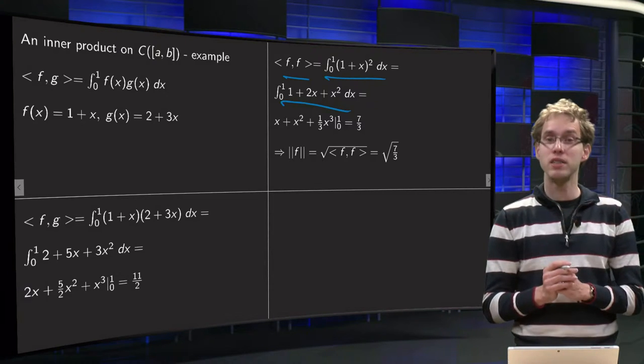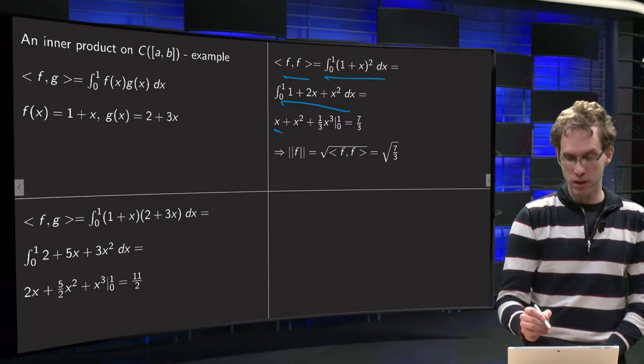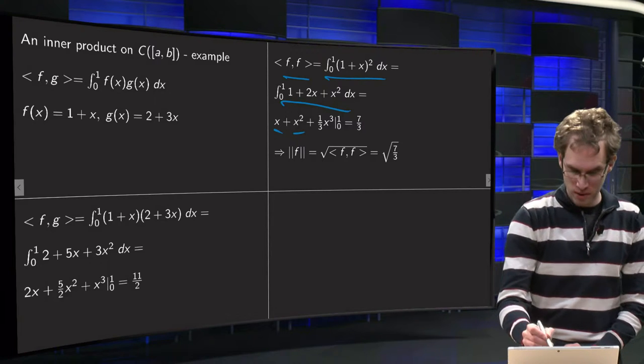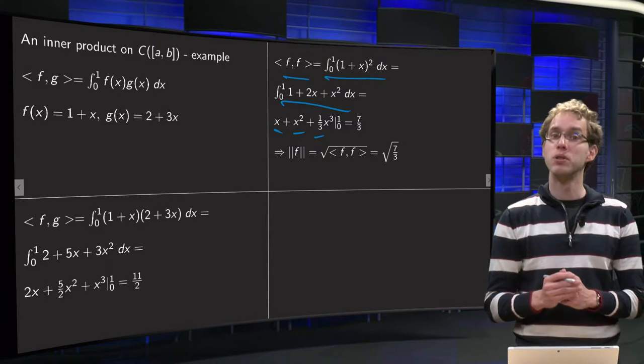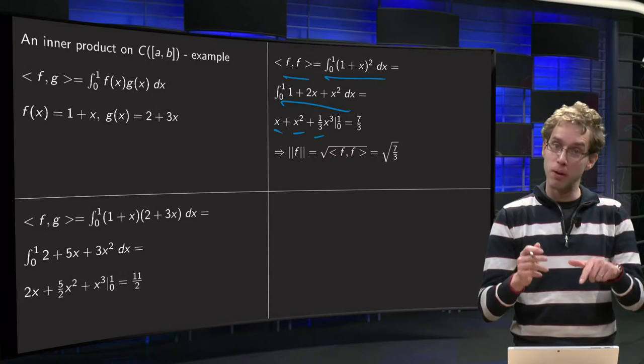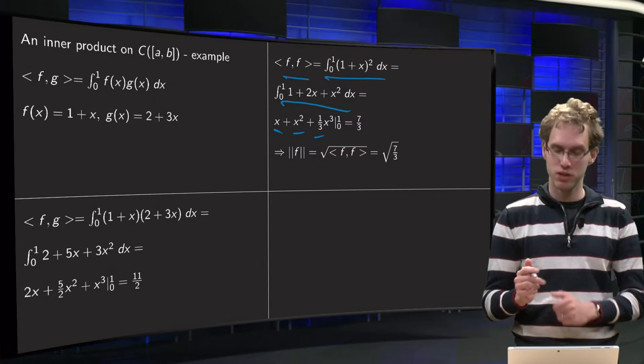1 plus 2x plus x squared. And then integrate term by term to get x from the 1, x squared from the 2x, and 1 third x cubed from the x squared. And then plug in the boundaries again, lower boundary 0, and upper boundary 1 plus 1 plus 1 over 3 equals 7 over 3.